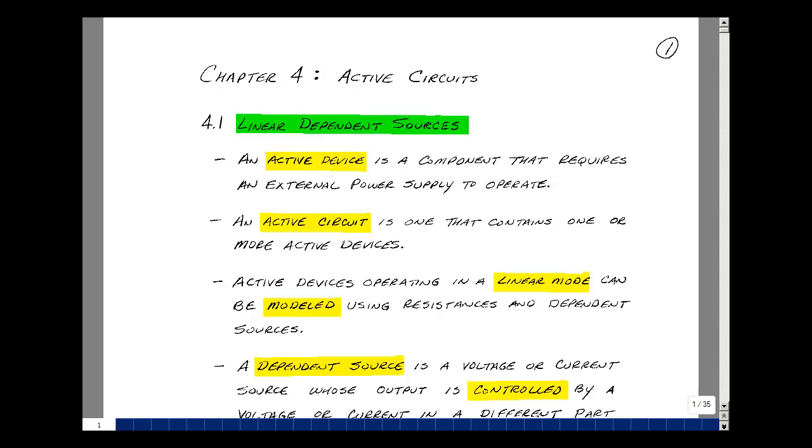An active device is a component that requires an external power supply to operate. An active circuit is one that contains one or more active devices. There are certain active devices that are operating in what's called a linear mode, and we can actually model those with resistances and dependent sources. An example would be a transistor.